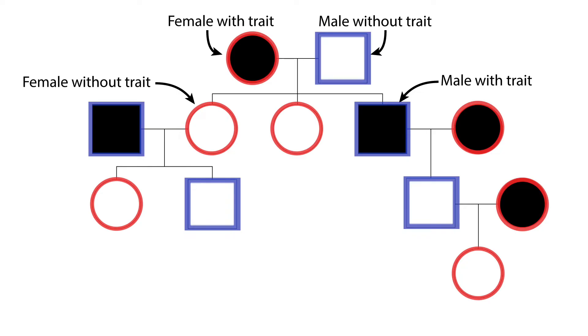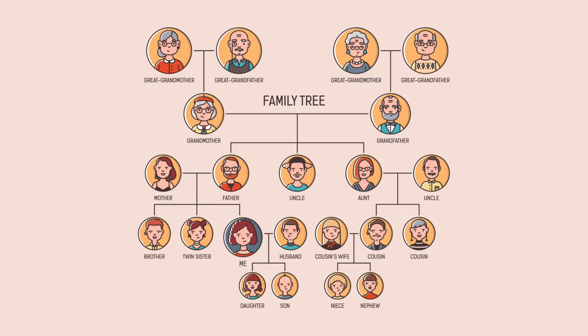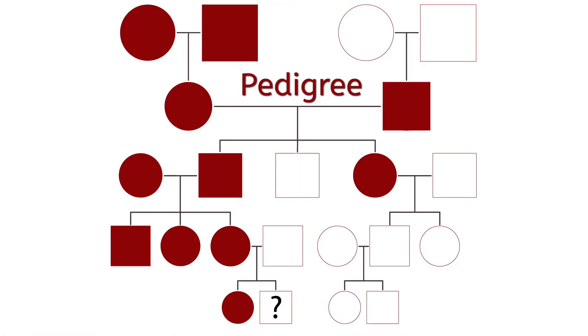Pause the video for a moment to fill in what these symbols mean in your notes. On our family tree, notice that the grandparents and great-grandparents have already gone gray or bald. We'll have to dig back through some old photos to find out what color hair they used to have and mark it correctly in our pedigree. Let's add these shapes to our family tree so we can more easily see how the red hair trait is passed on from one generation to the next.